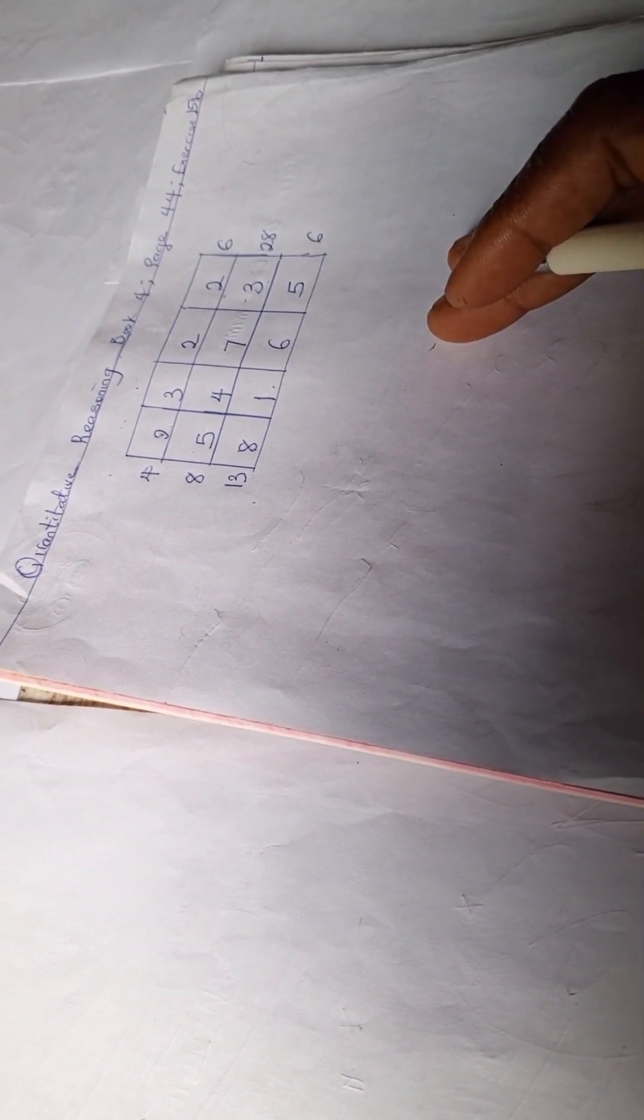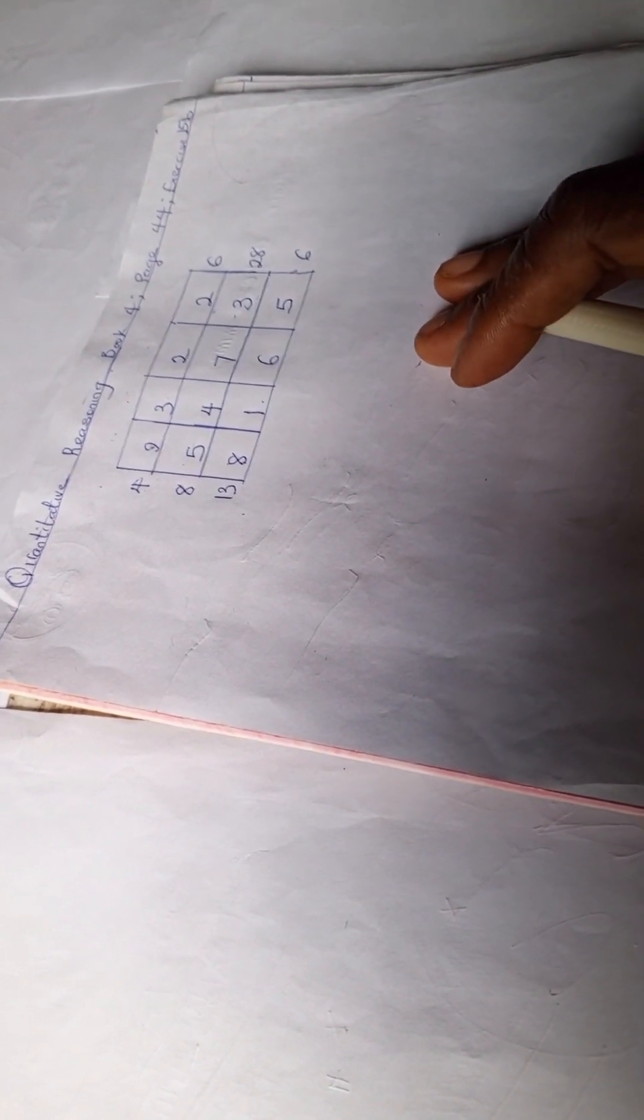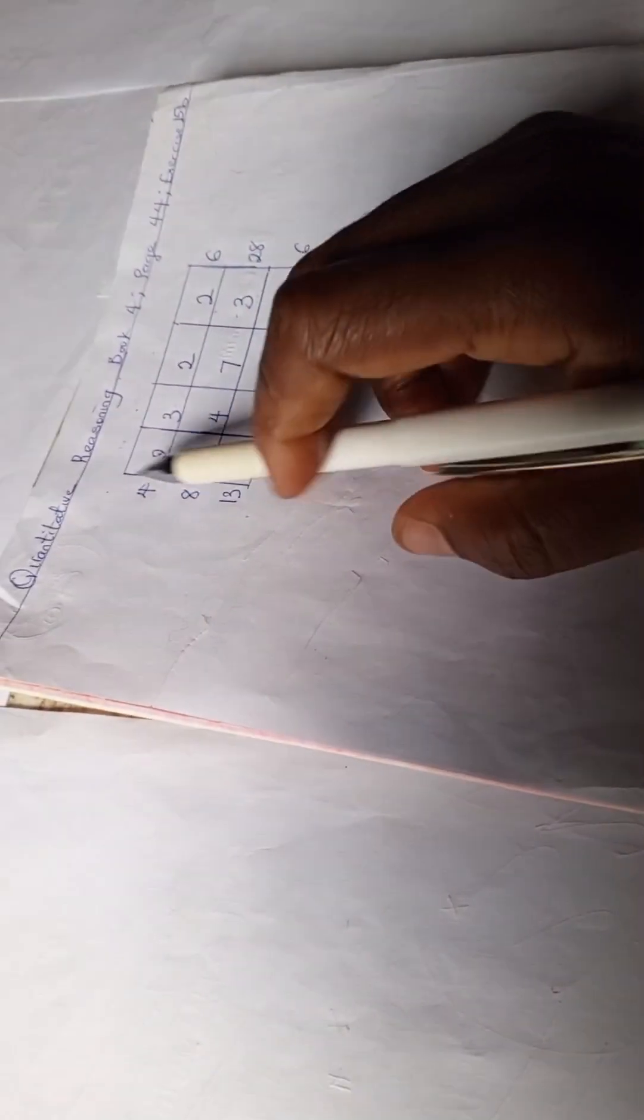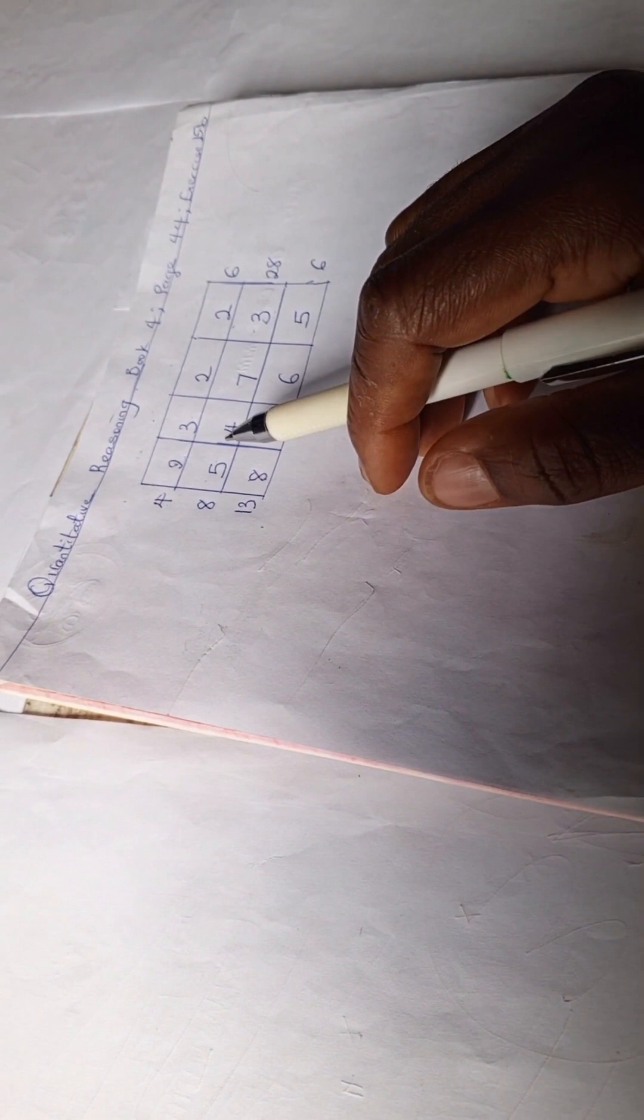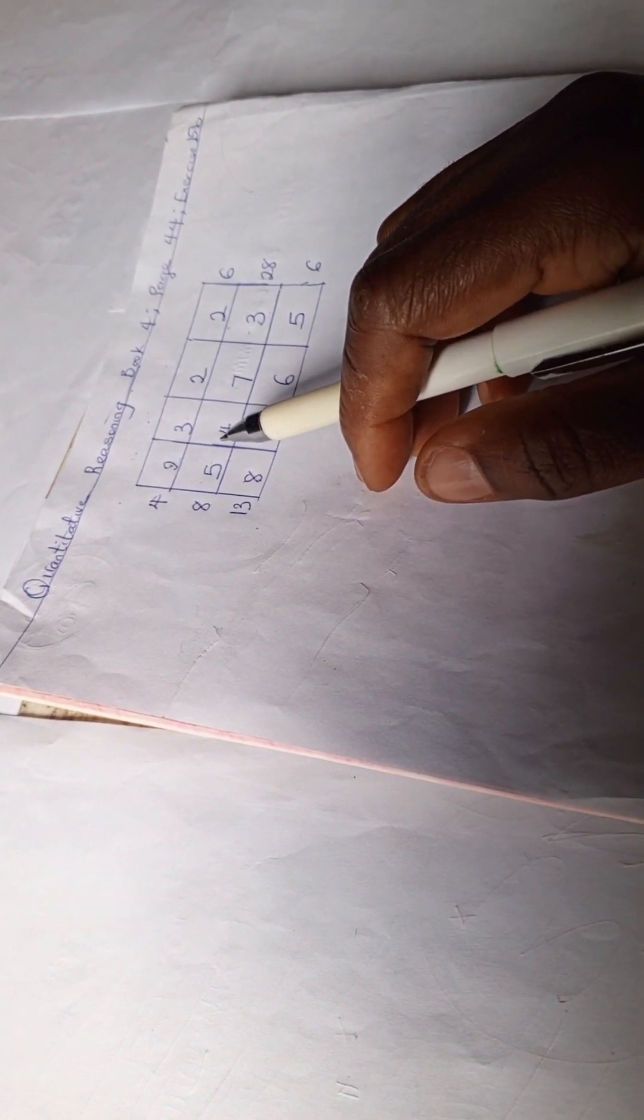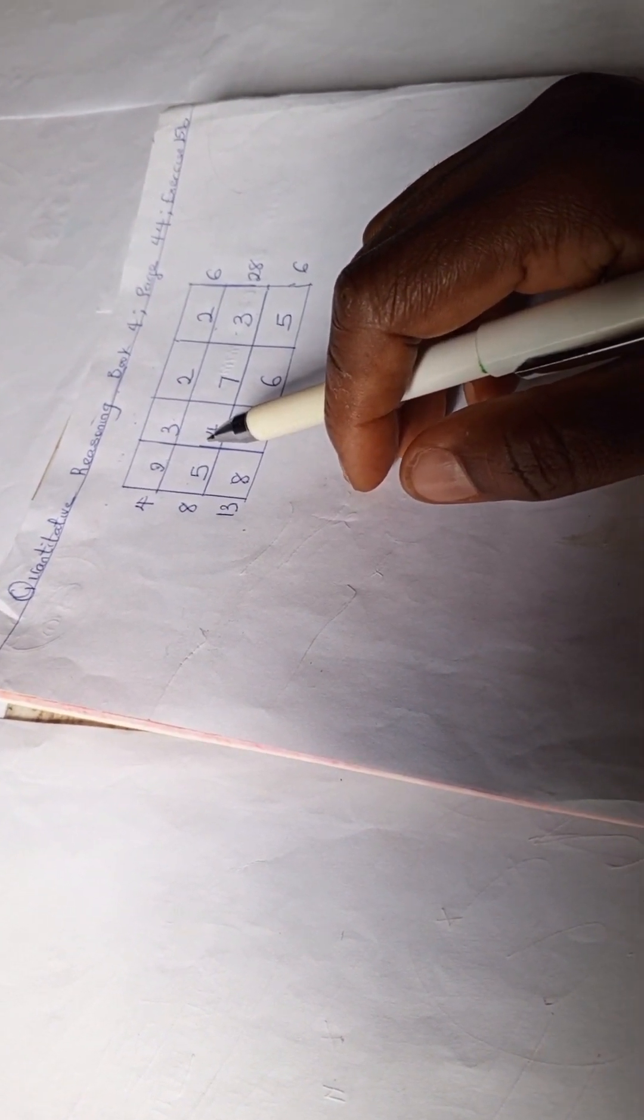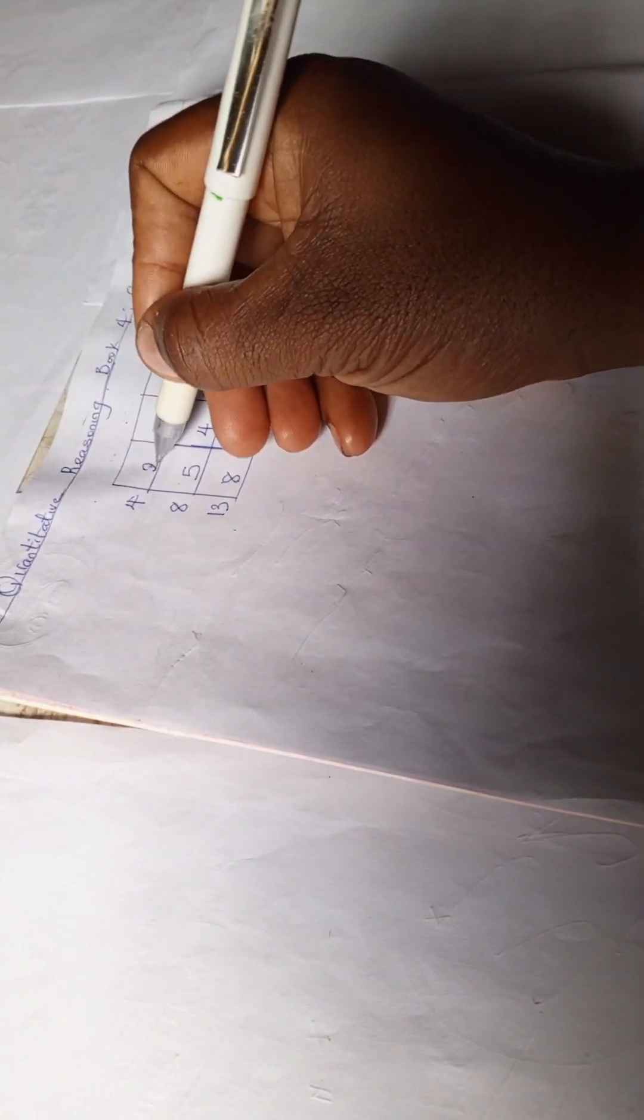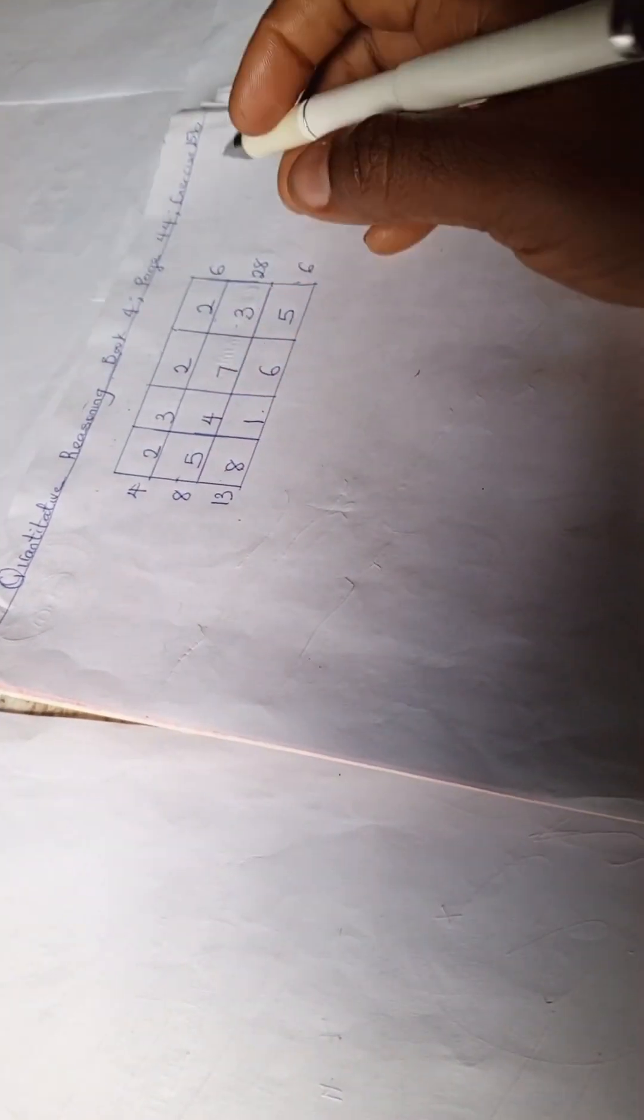Alright, so we have this problem before us. We have our Quantitative Reasoning Book 4, page 44 of Lantern Step Quantitative Exercise 5B. We have this problem we have here, we have our rows and columns.